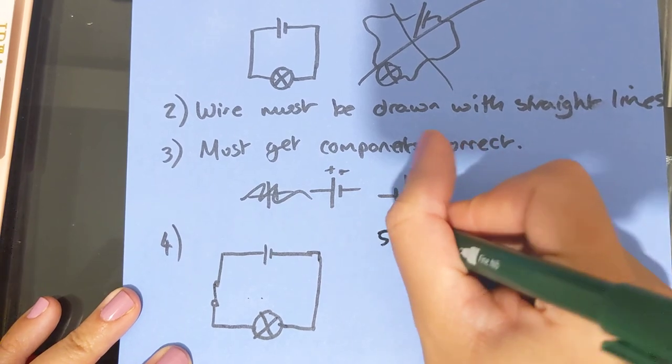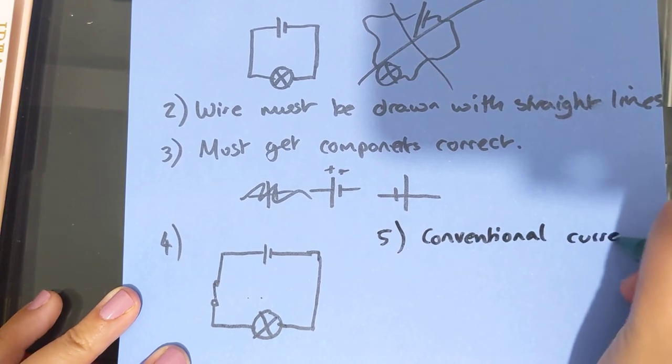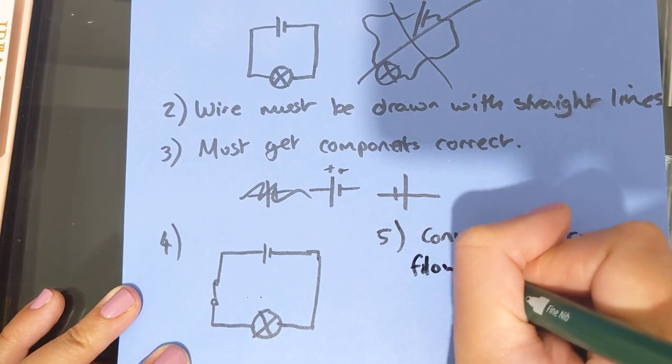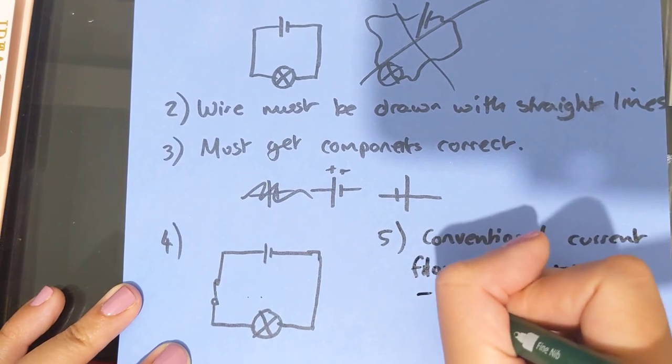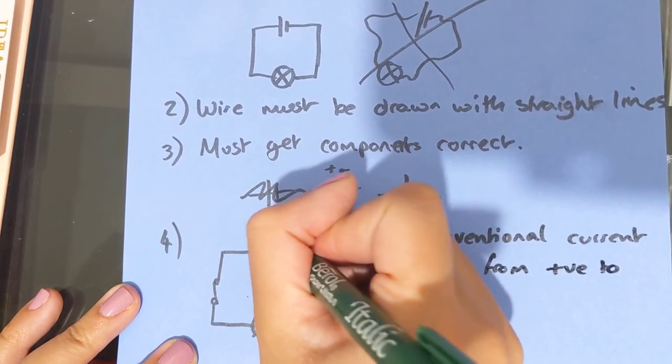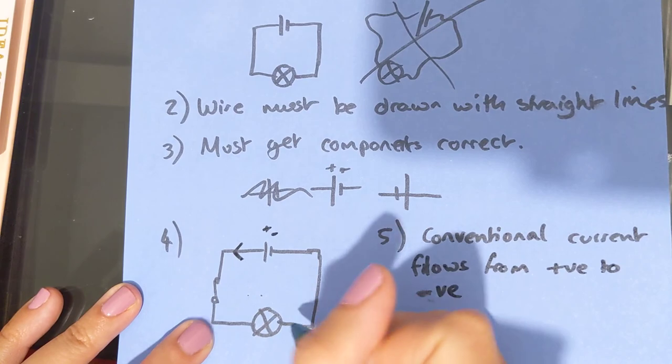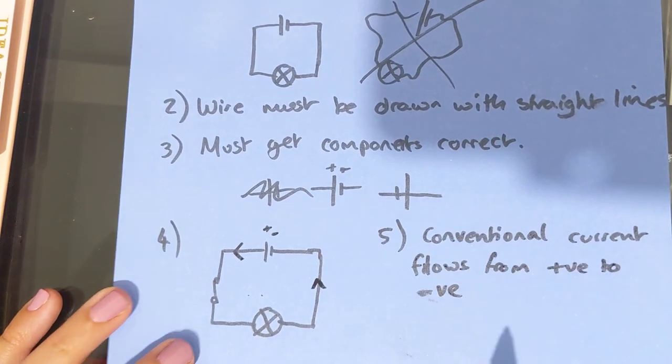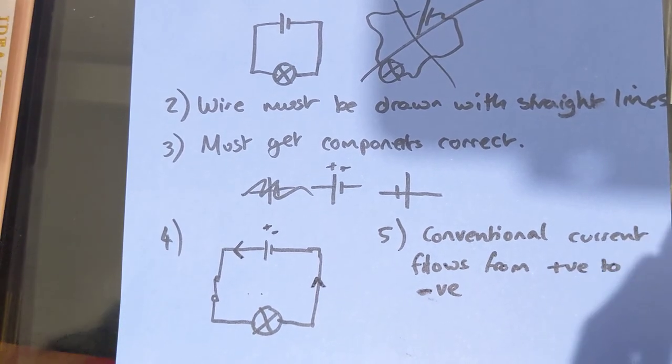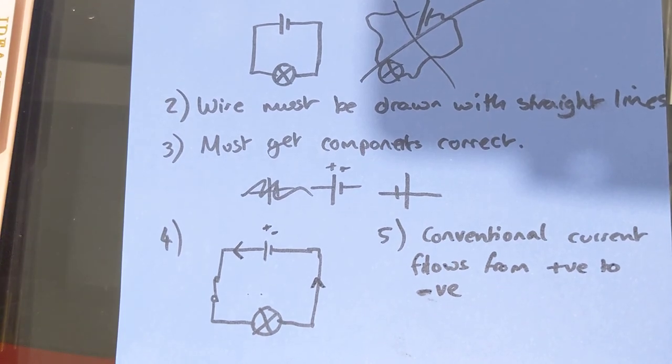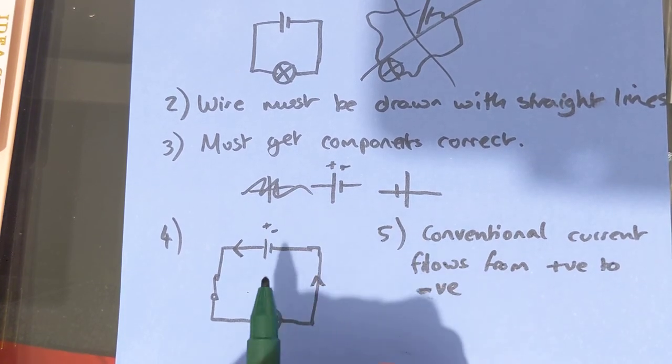And fifth is that conventional current flows from positive to negative. So if you were going to put the direction of the current on this circuit, you would be drawing arrows away from the positive connection. So that is a little bit confusing, isn't it? Because our early understanding of electricity tells us that electricity is the flow of electrons. And so you might think that that means that the current must go from the negative to the positive. But it's not. It's actually from the positive to the negative.